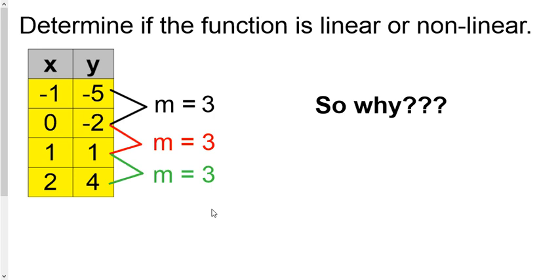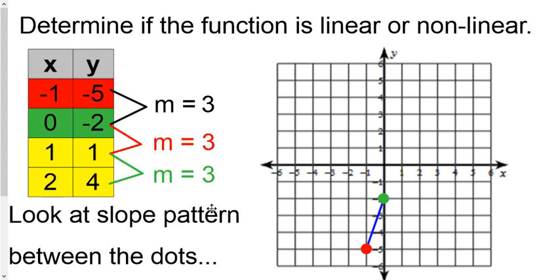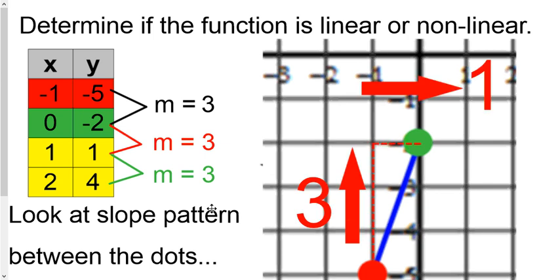So why can we trust this method of checking the slope all the way down the table? Let's graph each one of these ordered pairs. Negative one, five — we'll put that in red right there — and zero, negative two is right there. If you check the slope between these two dots and zoom in, you can see that you go up three and to the right one.